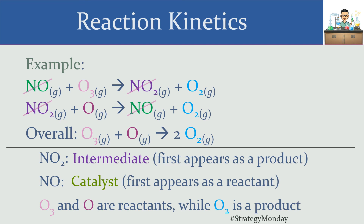Because intermediates and catalysts don't appear in the overall reaction, you can categorize them by knowing they're absent from the overall reaction. Once you have your overall reaction, look at the reactant side and the product side: if a molecule is on the left side, it's a reactant; if it's on the right side, it's a product.